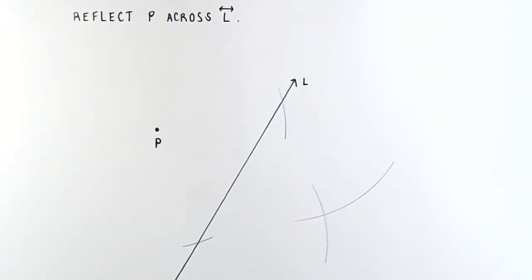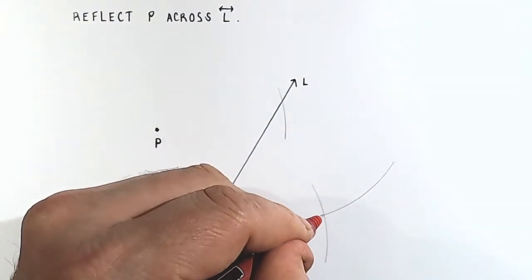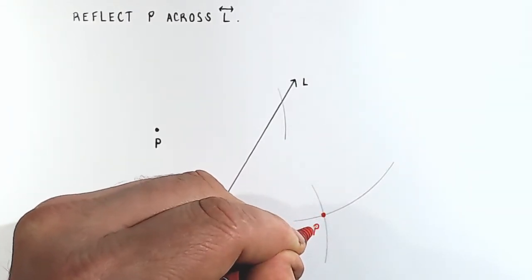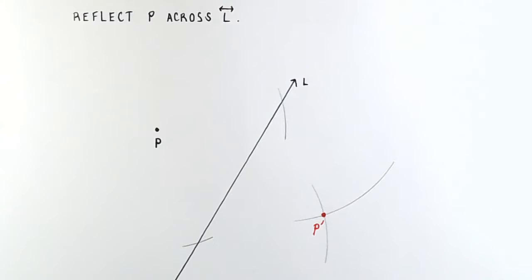This point right here where these two arcs intersect is point P prime. And that is how you reflect a point across a line.